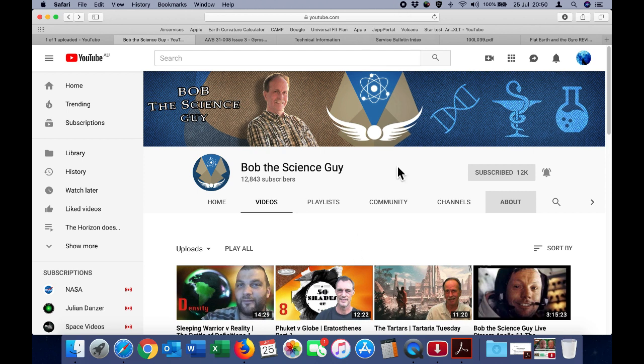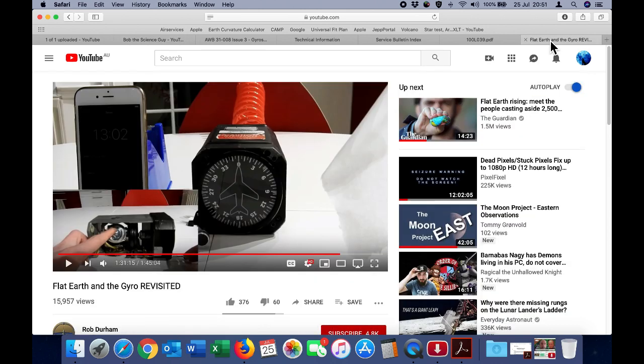So without taking anything away from Bob's video, I just want to talk on this topic myself, because one of the areas that flat earthers like to focus on are gyroscopes. And this is a very famous flat earth video where Rob Durham uses an aviation directional gyro to demonstrate what he believes is a stationary Earth. Now, Rob's a pretty decent guy, so please don't go over and give him a hard time. I did have some conversations with him several years ago when he first produced this video. He made a number of mistakes.